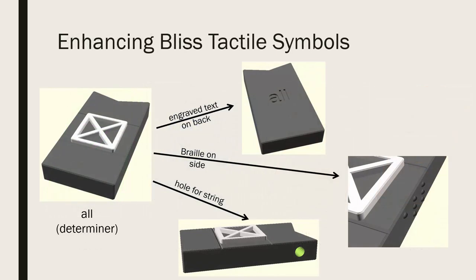The symbols can be enhanced by placing engraved text on the back surface, adding braille to the sides, or including holes at different locations for mounting the symbol on a string.